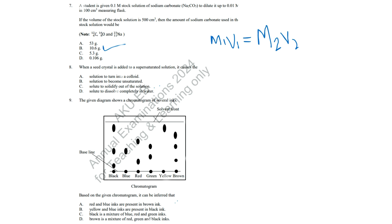Question 8: A seed crystal initiates crystallization, causing solute particles to solidify. Correct answer: C, Solute solidifies out of the solution. Question 9: Chromatography separates ink components, showing that brown ink contains red and blue. Correct answer: A, Red and blue inks are present in brown ink.